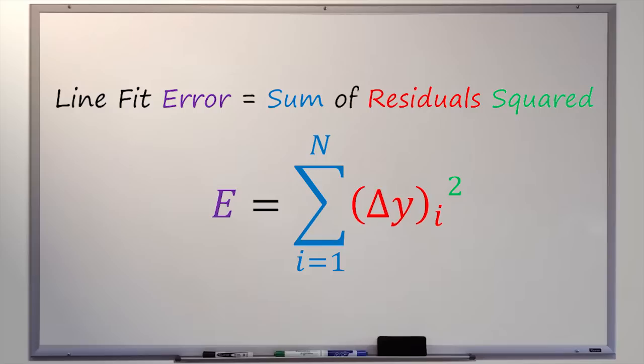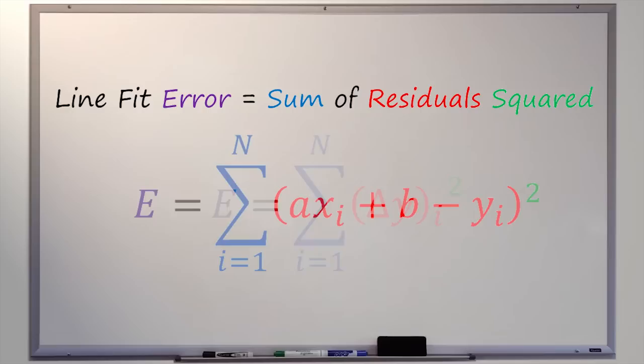Let's write out the equation for the error of a line that has been fit to a set of data. To calculate this error, we take all the residuals, square them, and add them up. As you can see in the equation, our residuals are delta y, each one gets squared, and then we sum — the i index goes from 1 all the way up to n, where n is the number of data points.